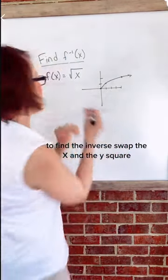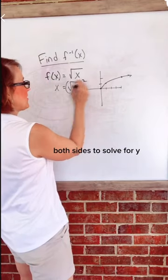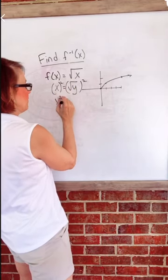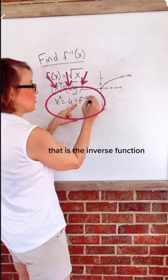To find the inverse, swap the x's and the y's. Square both sides to solve for y. That is the inverse function.